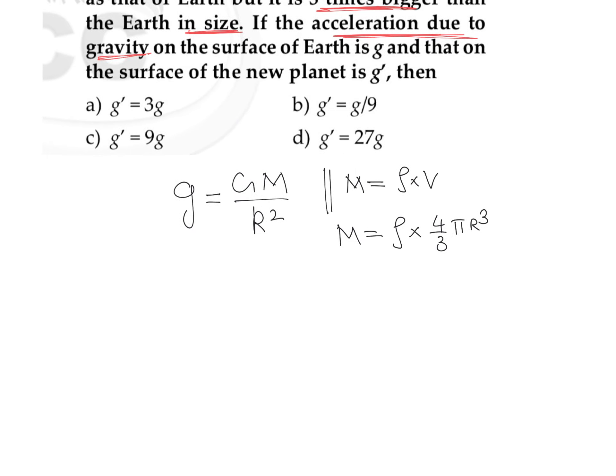If I am putting this value in, acceleration due to gravity can be written as G into density into 4 pi into R divided by 3 R square. We can observe that we can cancel this R square and R. So this is going to be G into rho into 4 pi into R divided by 3.